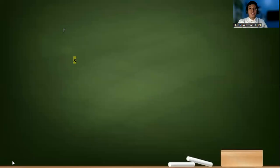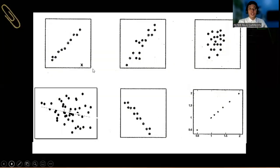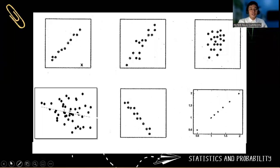So observe the different examples of scatterplot in this figure. The first one, look at the trend line that I have drawn. And this means a very high positive correlation. So the direction is described by the word positive, and the strength is described by the word very high.